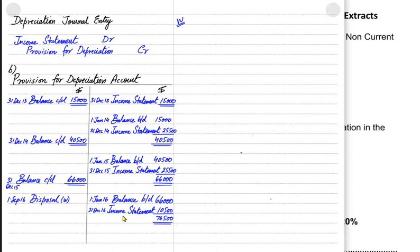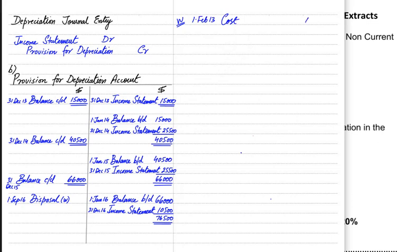The requirement here is to state gain or loss on disposal. Before making a disposal account — which basically records how much gain or loss there was — we first need to calculate how much gain or loss has taken place. The starting point is the cost of the asset. As you can see, the machine originally cost us 100,000.